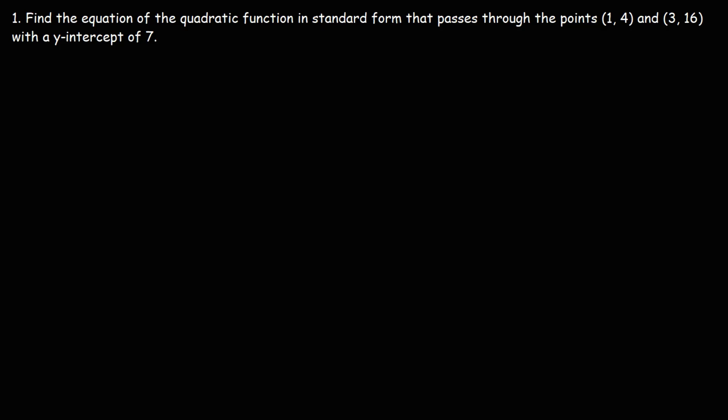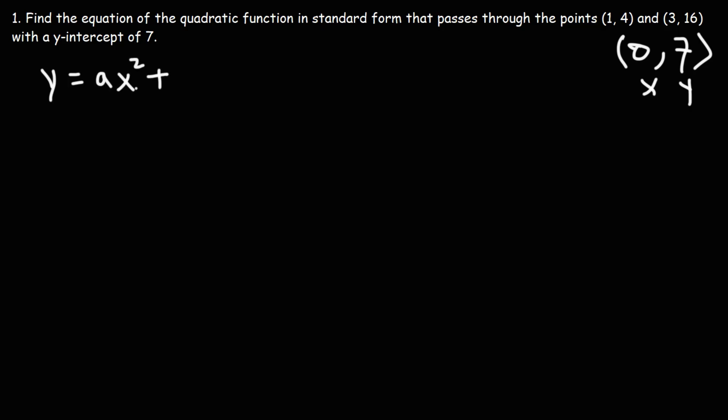We want to find the equation in standard form, and it passes through the points (1, 4), (3, 16), and it contains a y-intercept of 7. So for the y-intercept of 7, the point is (0, 7), where x is 0. We want to write the equation in standard form — that is y equals ax squared plus bx plus c. We need to use these three points to determine the values of a, b, and c. Once we have those values, we will have the equation of the quadratic function.